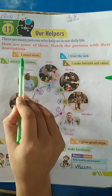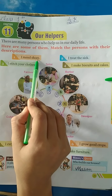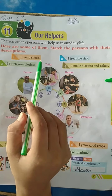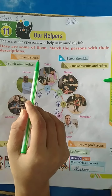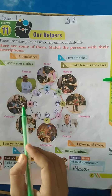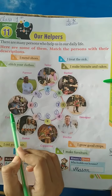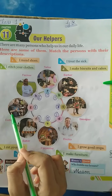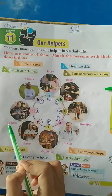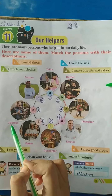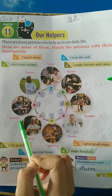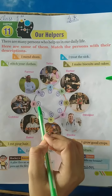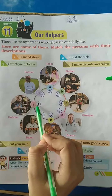Number one: I mend shoes. Aapke shoes korn banaata hai? Yeah, it's G — cobbler. Look at the picture. In this picture we see a cobbler. C-O-B-B-L-E-R, cobbler. So, write number one here.